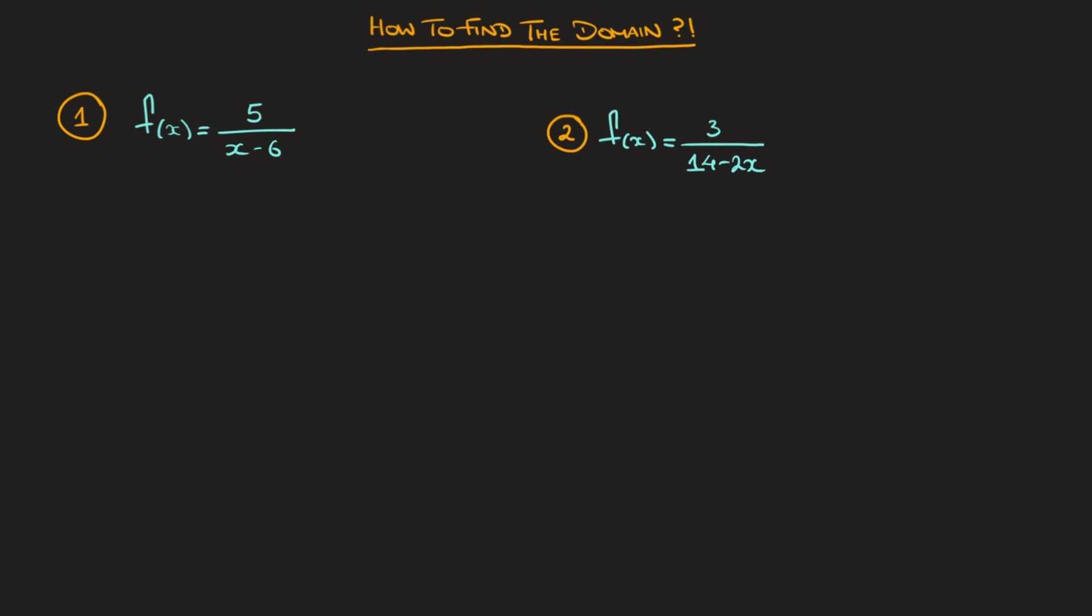And that sounds a bit complicated, but what that really means is that a function's domain consists of all of the values we can actually replace x by. And one of the best ways to find the domain is to find any numbers we can't replace x by. And so here, because we can't divide by zero, we need to make sure that x minus 6 doesn't equal zero.